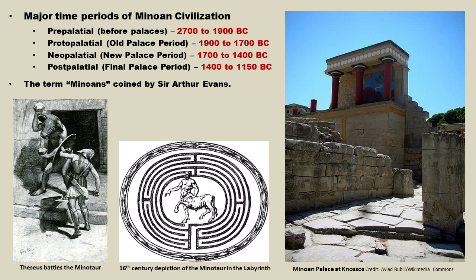But that was not what the Minoans called themselves — we do not know exactly what they called themselves because we do not have a written history. The Linear A scripts discovered on Crete have not been deciphered, so it is not clear what the real name of the Minoans was. It is a name Arthur Evans used from Greek mythology. Many of the Greek myths about Crete came about many centuries after the Minoans had gone out of existence.